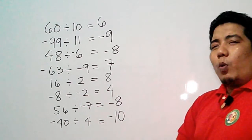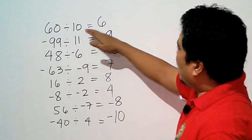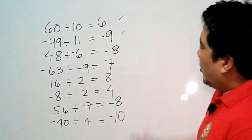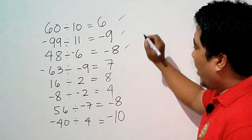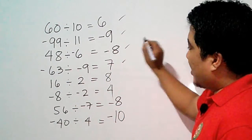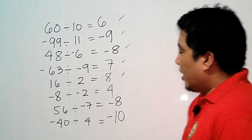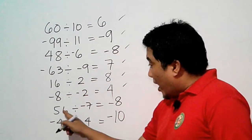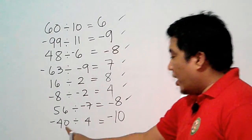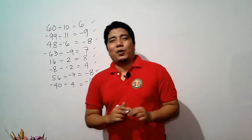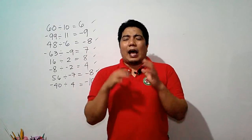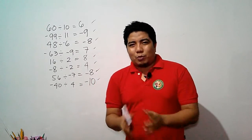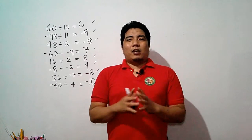Let's recheck whether our answers are correct. Positive divided by positive: 60 — correct. Negative and positive: negative 9. Unlike sign: negative 8. Same sign: positive 7. Same sign: positive 8. Same sign: positive 4. Unlike sign: negative 8. Unlike sign: negative 10. I hope you have understood our lesson about dividing numbers and dividing integers. Now it is time to challenge you with our practice exercises.